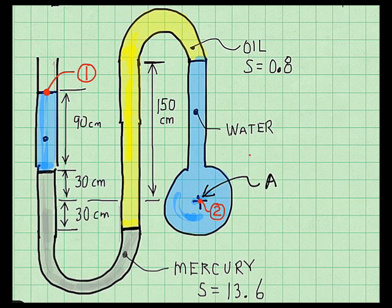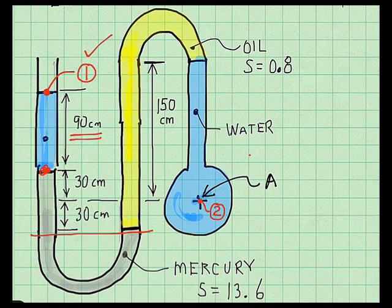Okay, you start with the pressure here at point 1, then you add the pressure change to move down here to this point. So that pressure change is this elevation distance, 90 centimeters, times the specific weight of water. So you have gamma water times 0.9 meters. Then you move down to this elevation and add the pressure change from here to here.